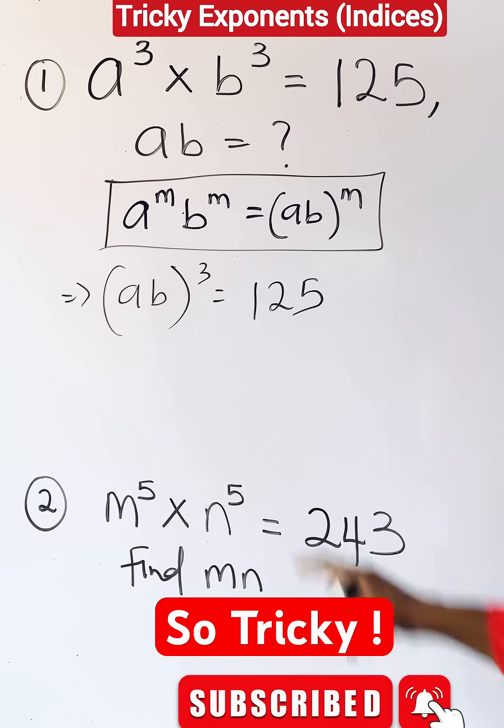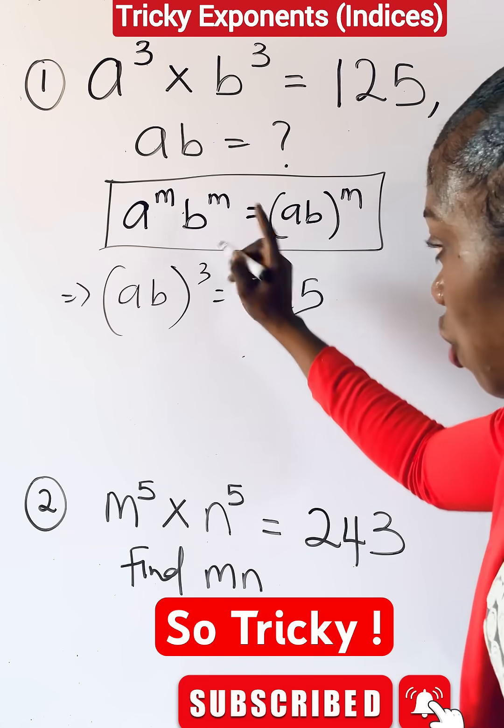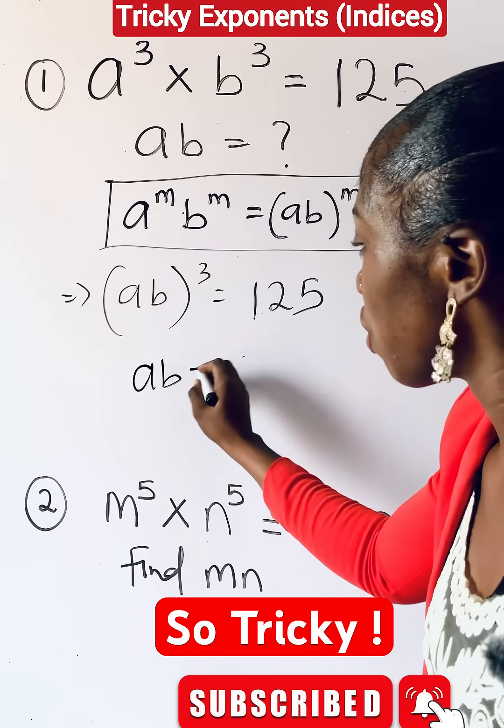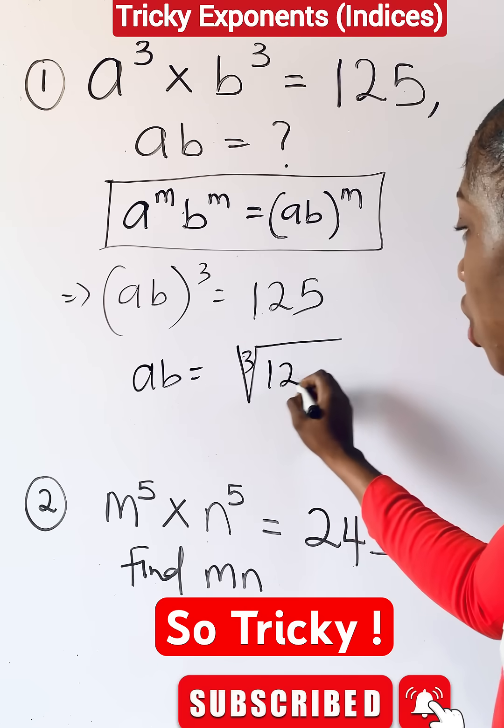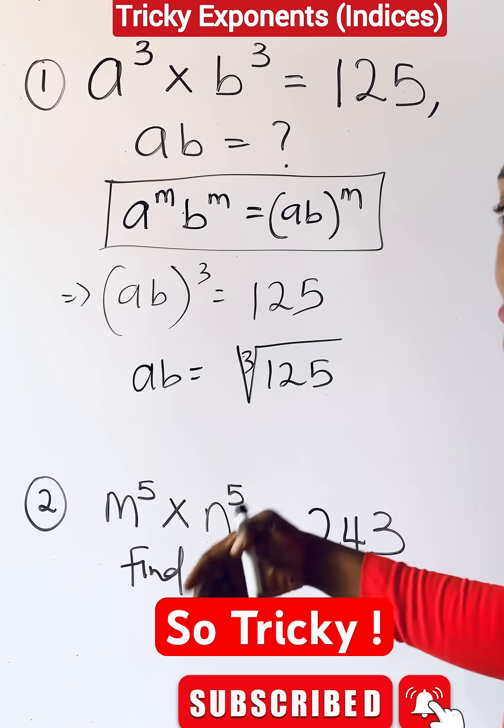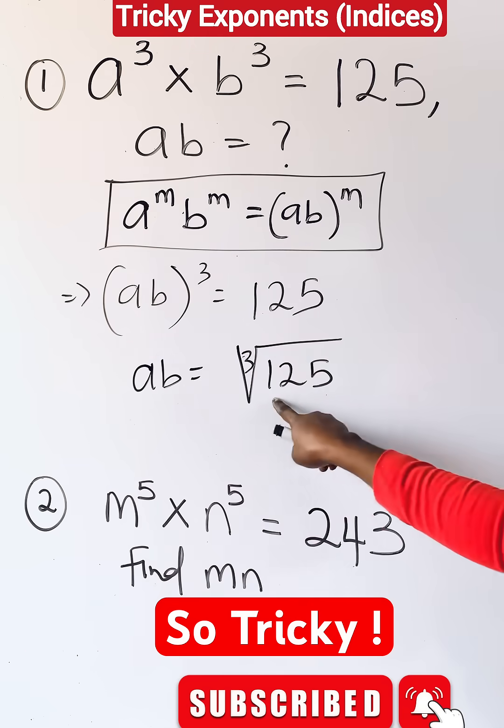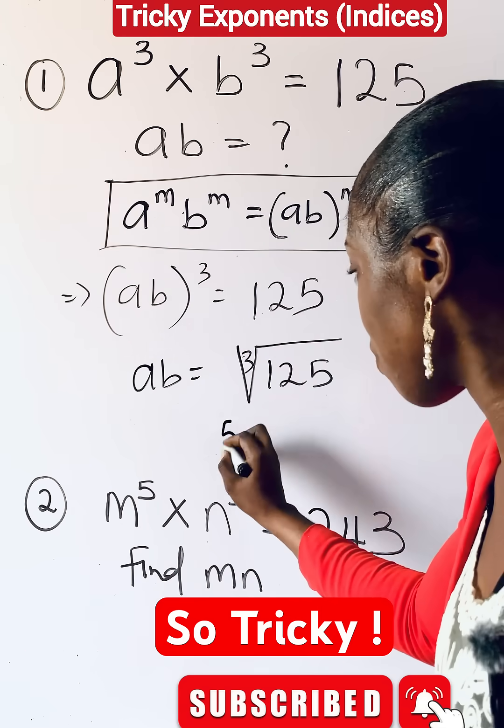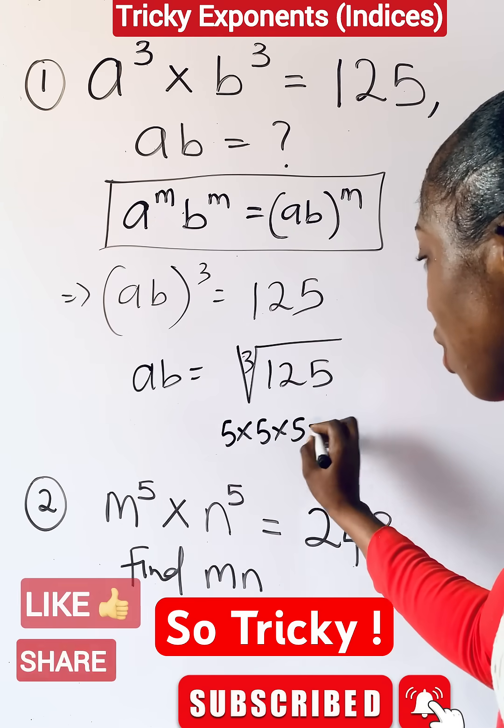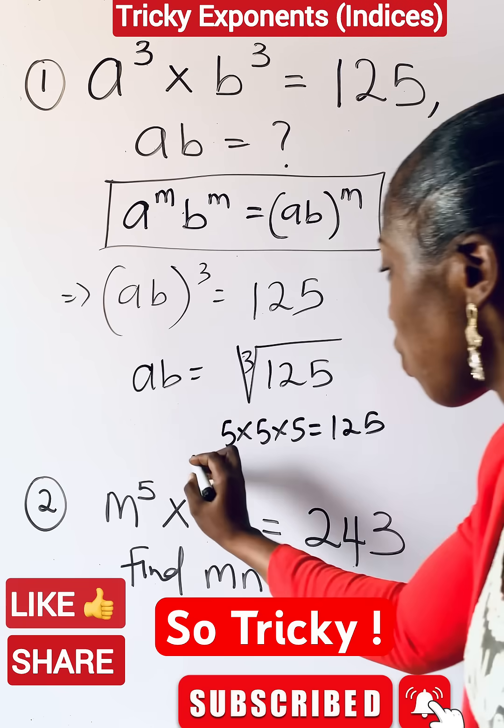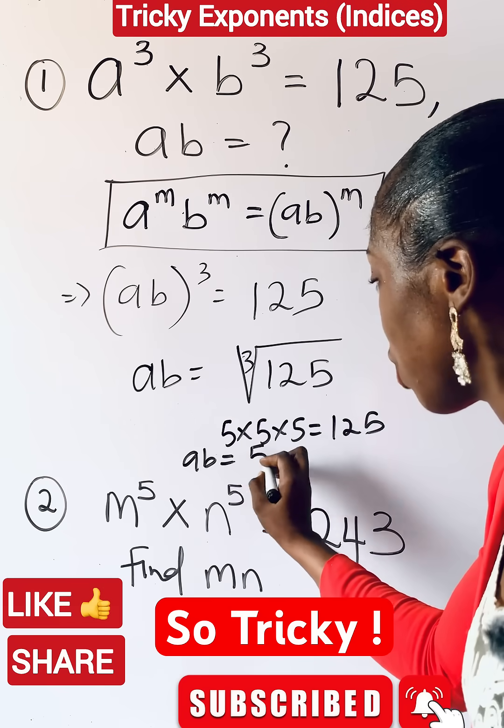So what do you do to remove this three as a power? You cube root. So ab will be the cube root of 125, and that means what number am I going to multiply three times repeatedly to give me 125? And that is 5 times 5 times 5 is 125. So ab is going to be 5 as an answer.